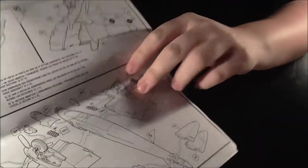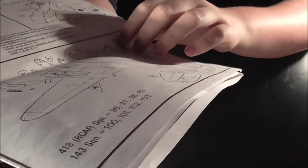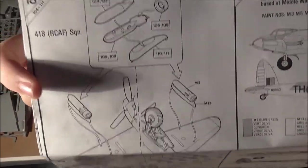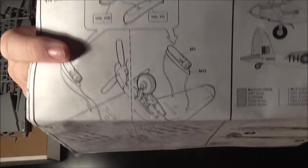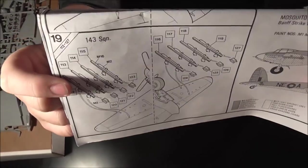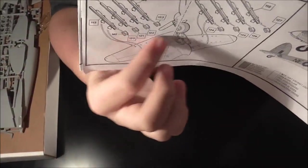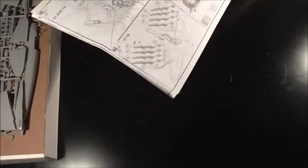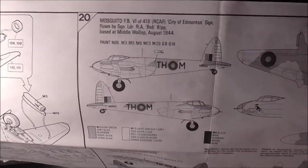So, the horizontal stabs. Ailerons. Exhausts. Just general bits and pieces there. So, there's another two instructions on the back. So, we have eighteen. Showing a couple of bombs going on. And number nineteen, just showing the rest, like the rest of the ordnance going on.